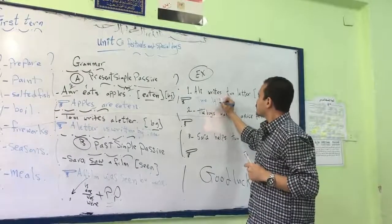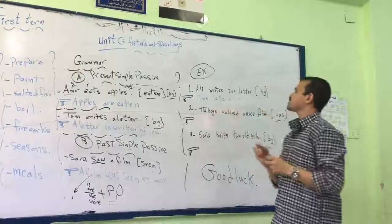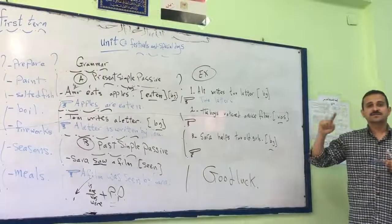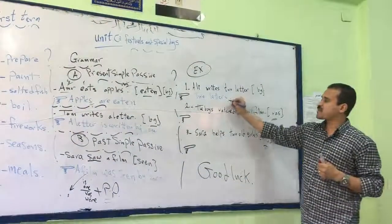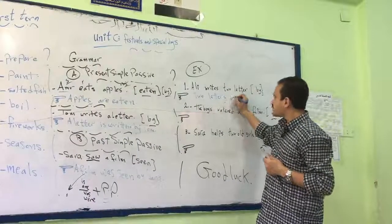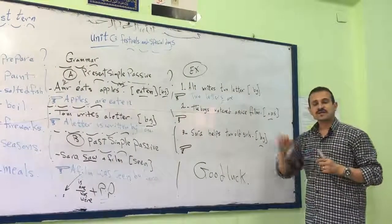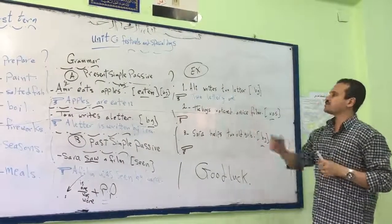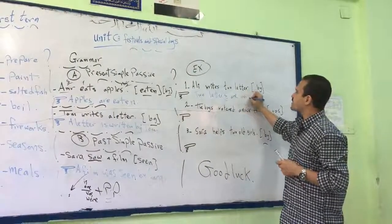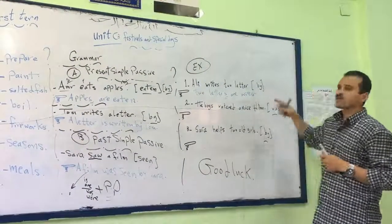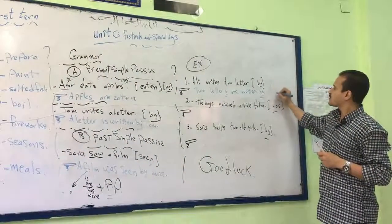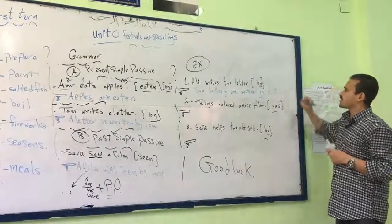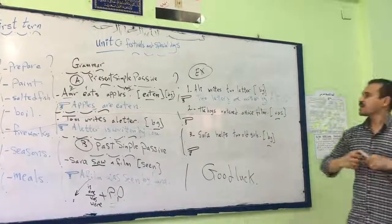Two letters. Are or is? Very good, this is plural, so we use are. Number three, the past participle. Very good. Two letters are written. And then we will use by. That's right.